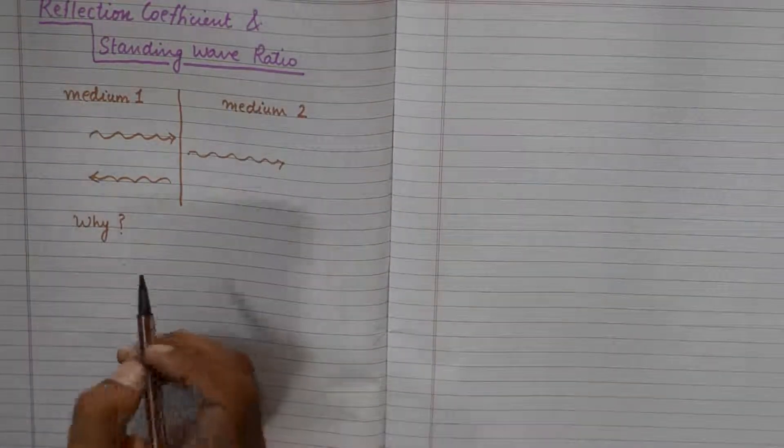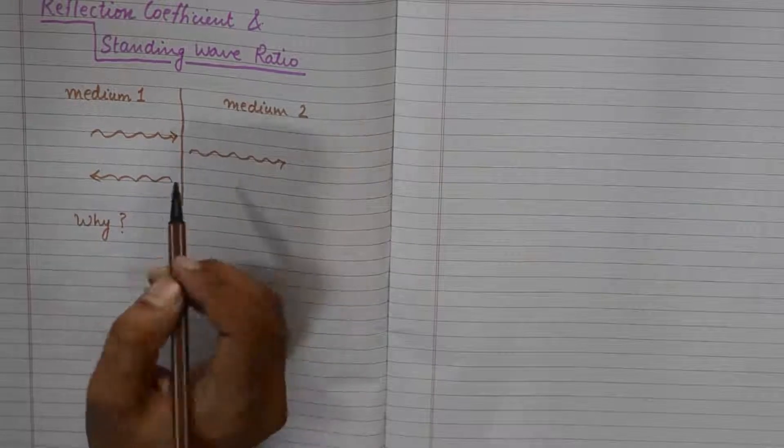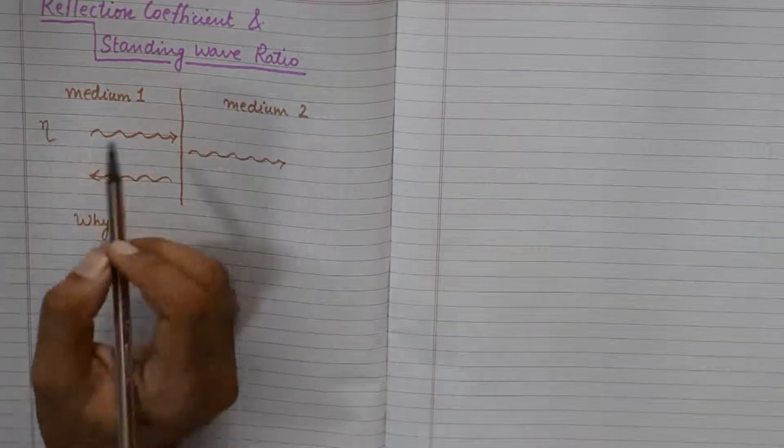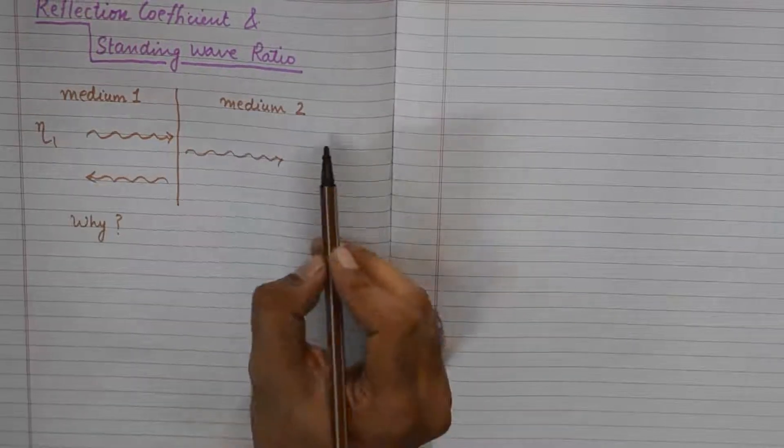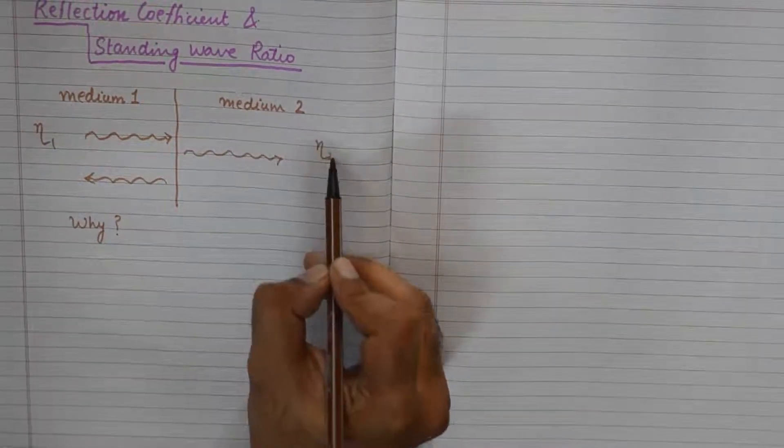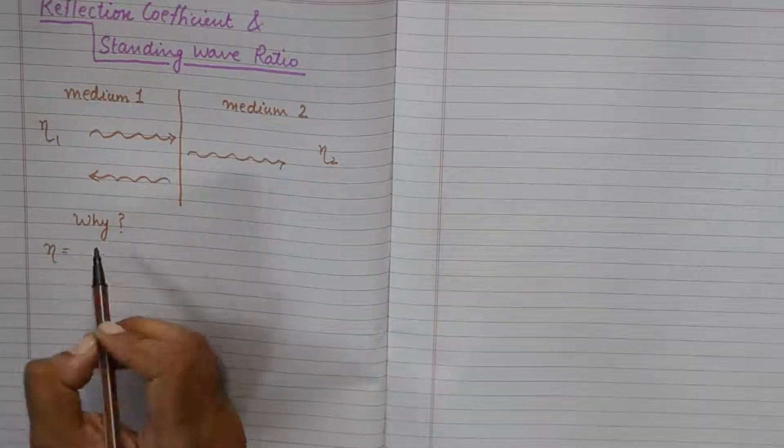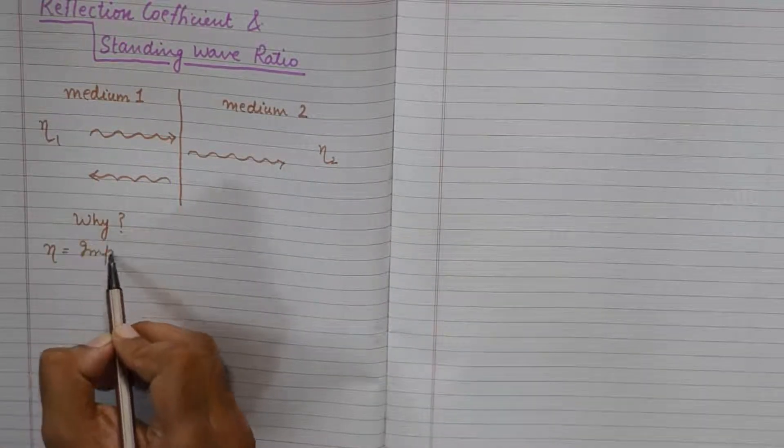The answer to this why is pretty simple. Medium 1 has eta equivalent to 1 and medium 2 has eta equivalent to 2. Now eta is known as the impedance of a medium.